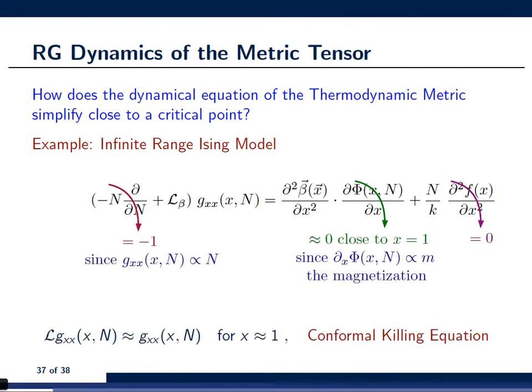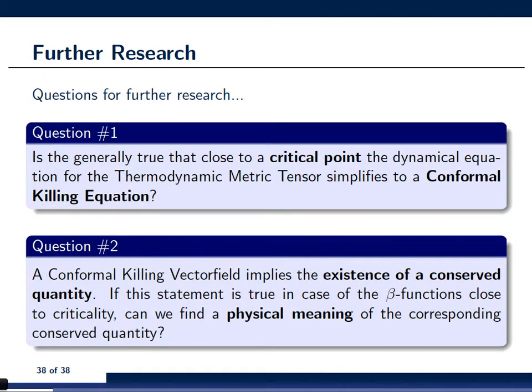So, what we're left with is what mathematicians call the conformal killing equation. It says that L applied to gxx is approximately gxx in the vicinity of a critical point. Now, this is a very beautiful eigenvalue-like equation. And this equation has several interesting consequences.